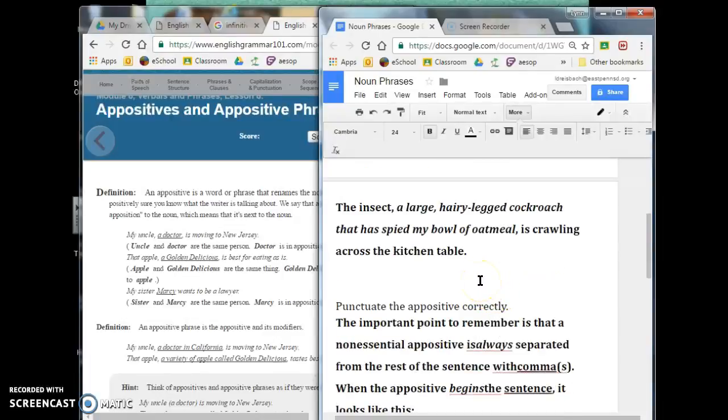And, this one takes it a step further. We've been talking about clauses before jumping into appositives. So, for this one, we have the insect, a large, hairy-legged cockroach that has spied my bowl of oatmeal is crawling across the kitchen table. So, for this one, a large, hairy-legged cockroach that has spied my bowl of oatmeal is our appositive phrase. But, within the appositive phrase, we have, that has spied my bowl of oatmeal. We have a clause, a dependent clause, right in here.